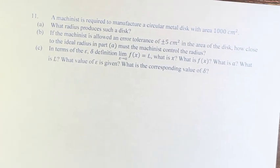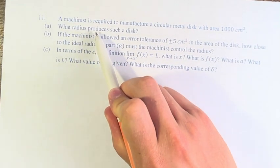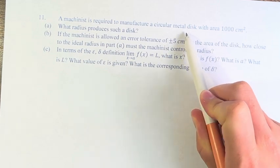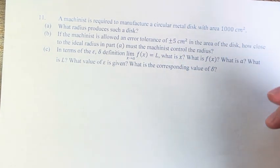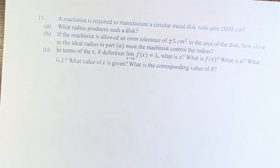Hello, and welcome back to another video. In this problem, we're told that a machinist is required to manufacture a circular metal disc with area of 1,000 centimeters squared. So first, we're asked what radius produces such a disc.